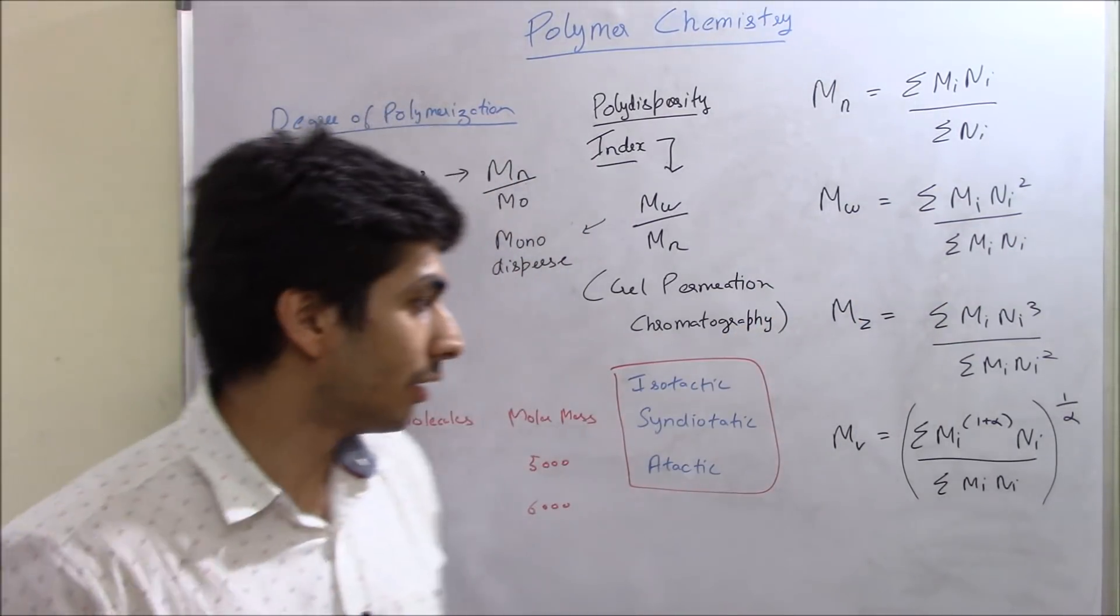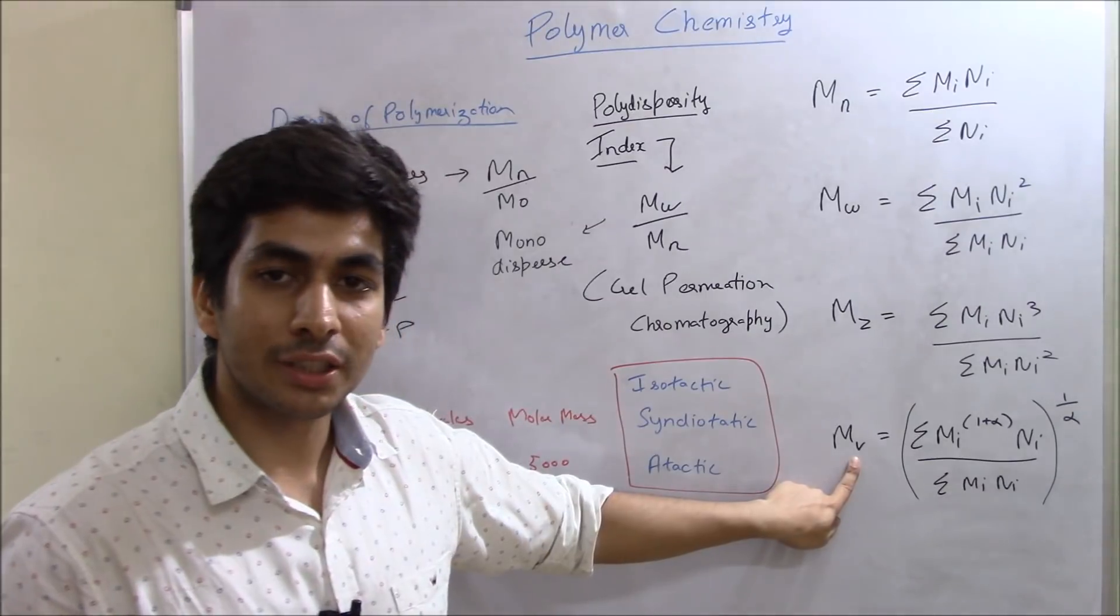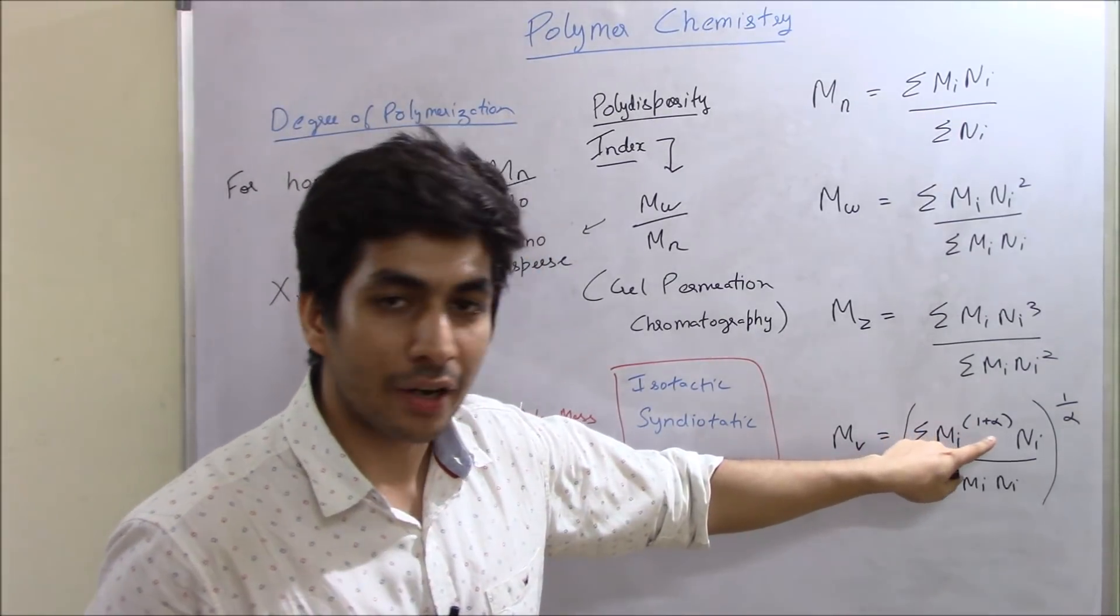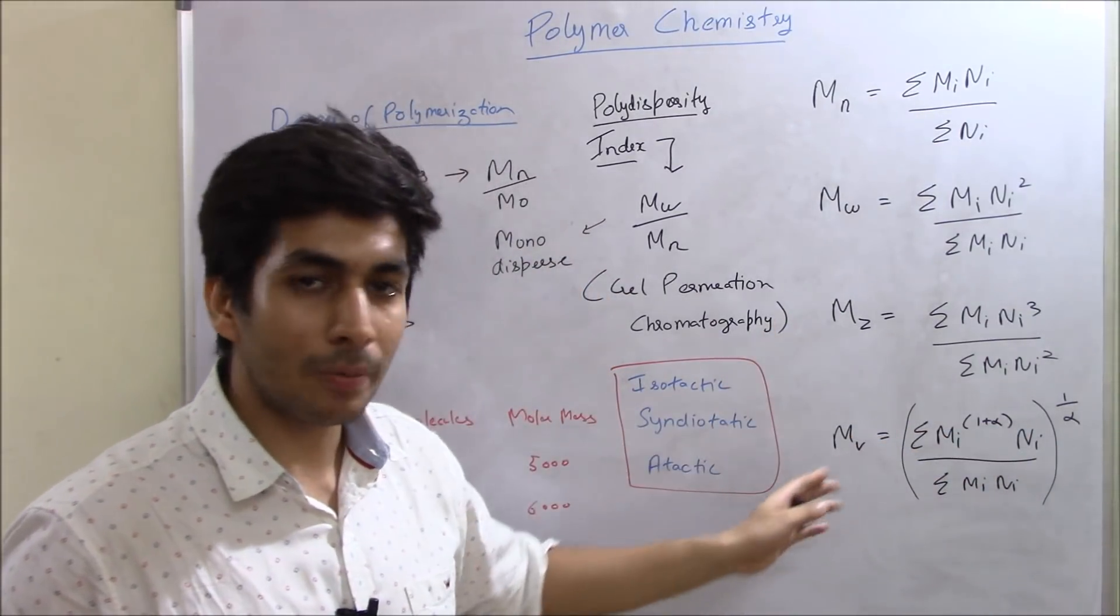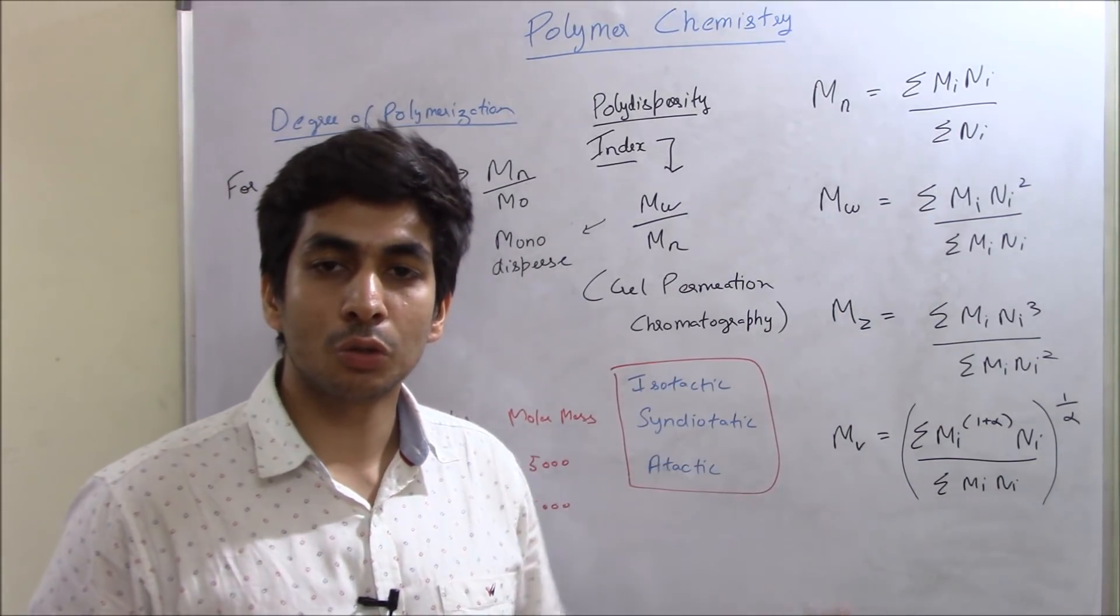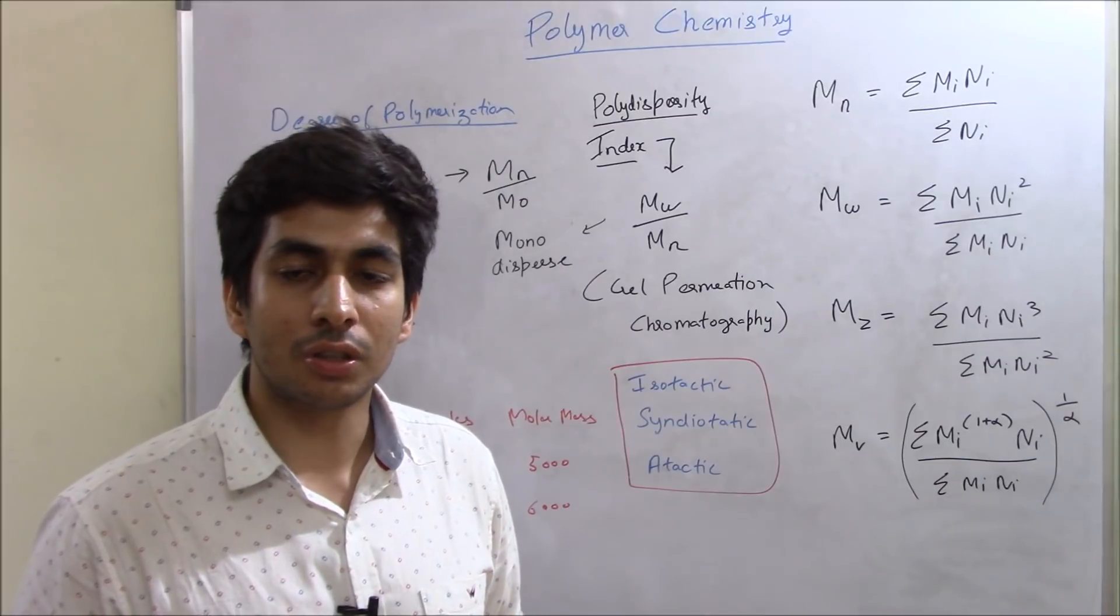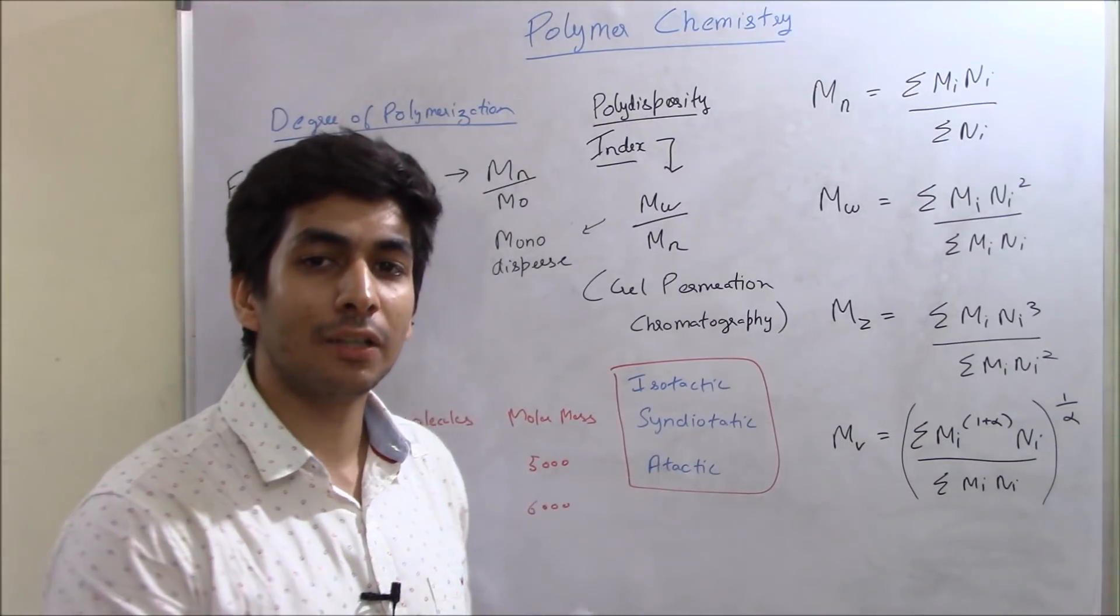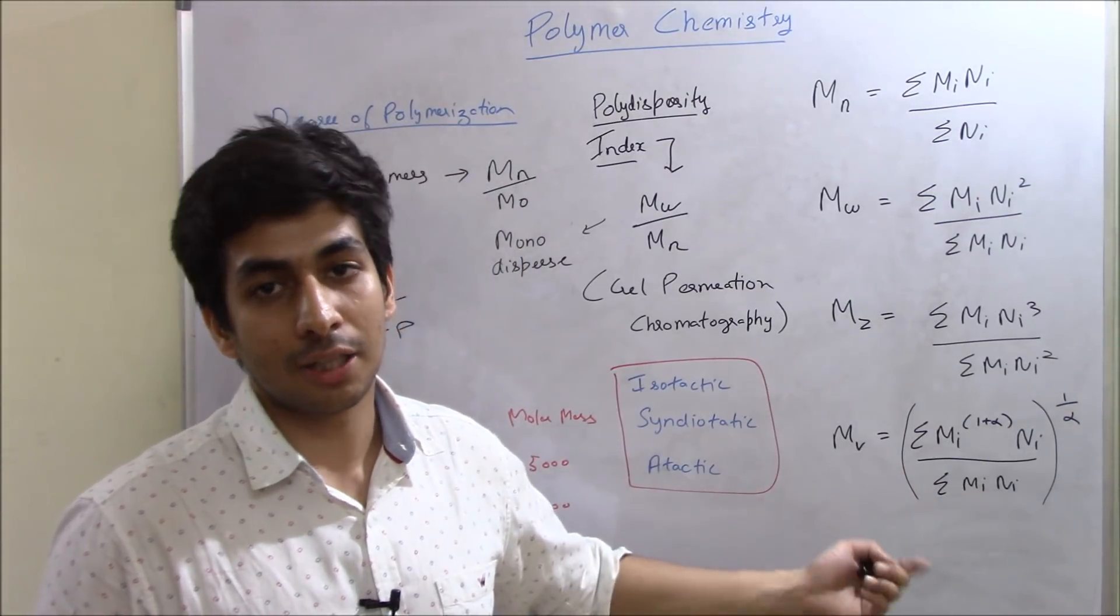Then we have one more term which I don't think might be asked but still I'll give you just for the sake of it. That's viscosity average molecular weight. And how do you calculate that? Sigma mi, here one new term comes that is alpha. Sigma mi 1 plus alpha ni upon sigma mi ni and the whole bracket 1 by alpha to the power 1 by alpha. So this is the formula. Now what is this alpha? So there were two scientists, Mark and Hovick. So it's also called Mark Hovick equation, this one. And alpha is basically a constant or exponent of Mark Hovick equation. So in case a question is asked from this particular formula, they will give you the value of alpha or they might give you to find out the value of alpha given these all terms are given to you. So this is really rare that they might ask you.